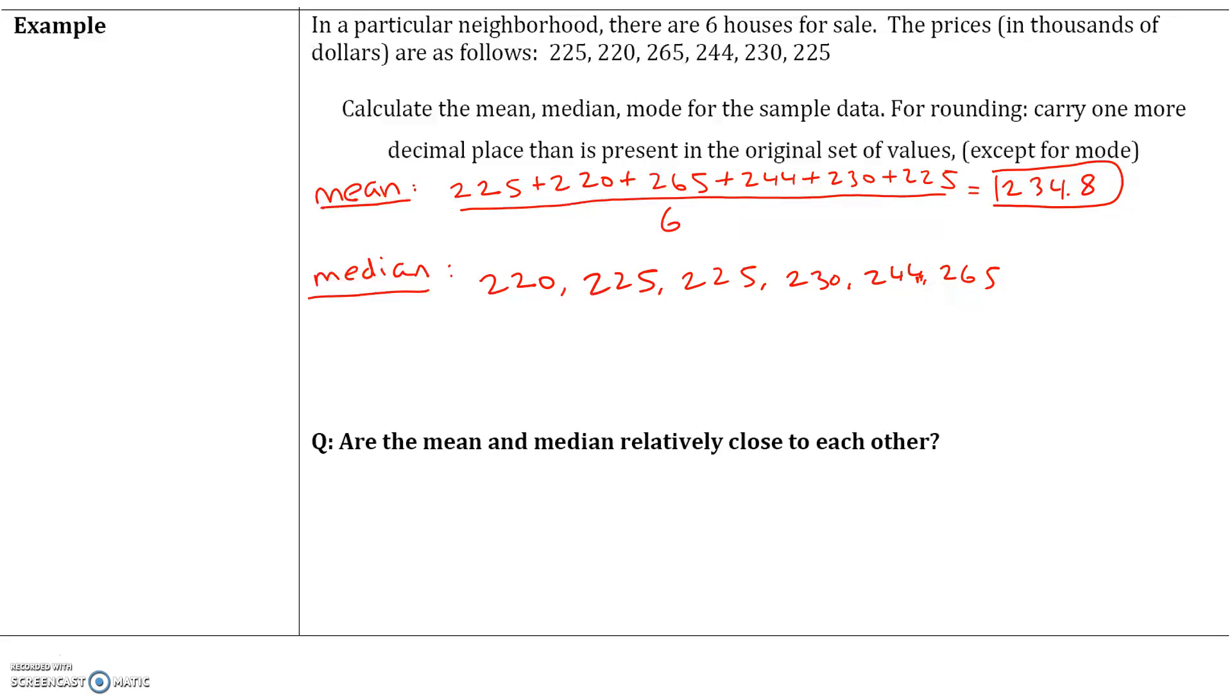Since we have an even number of values, the median will be the average of the two middle values, 225 and 230. An easy way to look at this is you take the number of data values, which is 6, and divide that by 2, which means the middle values are the third and fourth value. If we take the average of 225 and 230, so 225 plus 230 divided by 2, this gives us 227.5. So our median is 227.5.